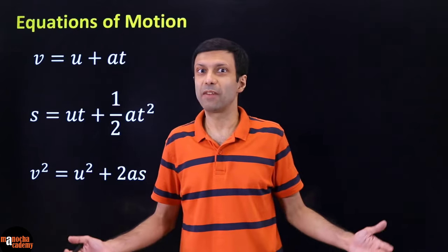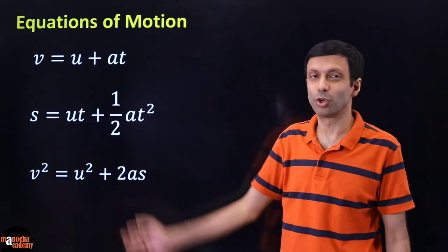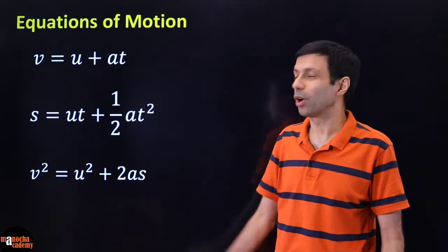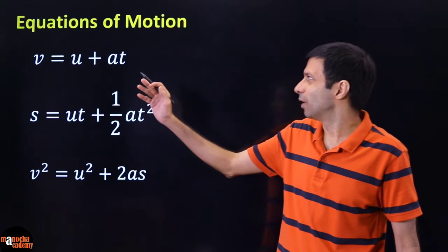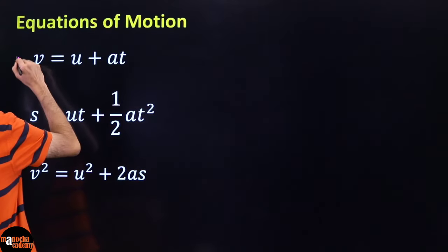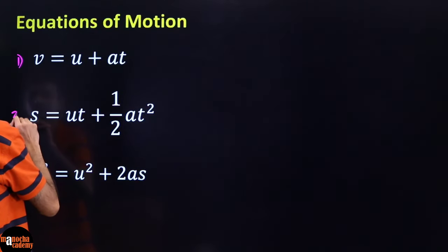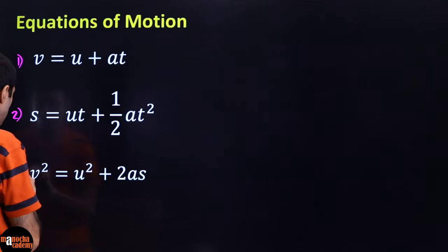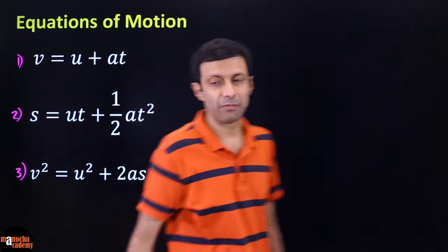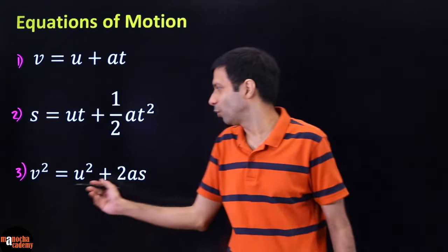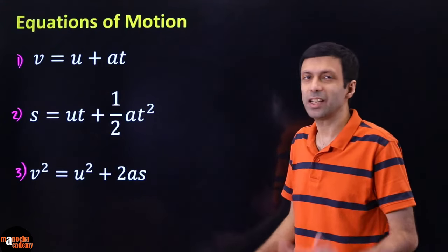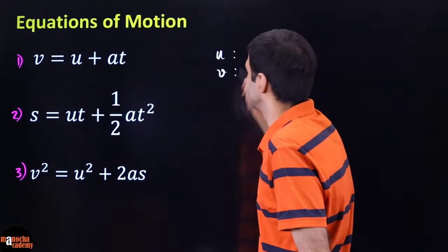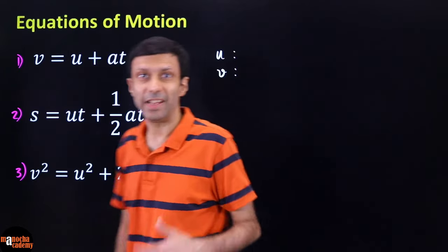We talked about these equations of motion in the last class. The three important ones are: V equals U plus AT, S equals UT plus half AT squared, and V squared equals U squared plus 2AS. Let's do a quick revision of what all these symbols mean.